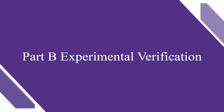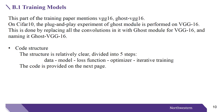In the second part, we introduce the experimental verification. This part of the training compares VGG-16 and Ghost-VGG-16 models. On CIFAR-10, the plug-and-play experiment of the ghost module is performed on VGG-16 by replacing all the convolutions in it with the ghost module, naming it Ghost-VGG-16. The structure is divided into five steps: data, model, loss function, optimizer, and iterative training. The code is provided on the next page.